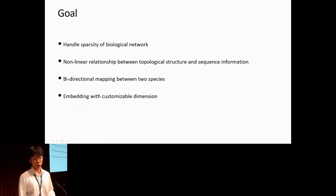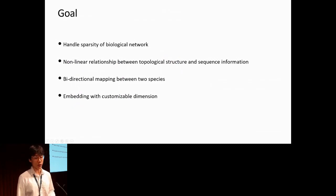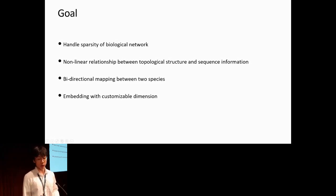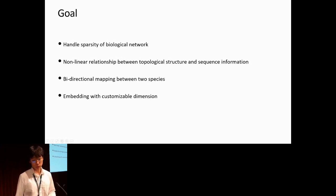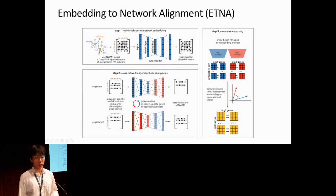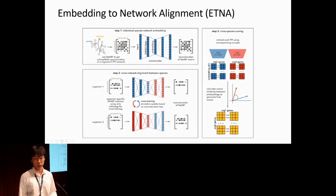Our goal is to propose a new method for inferring functional relationships between different species. We want to handle the sparsity of biological networks, handle the non-linear relationship between topology and sequence information, produce bidirectional embeddings, and allow customizable embedding size. We propose the Autoencoder-based Deep Network Alignment, which we call AEDNA, containing three main steps.